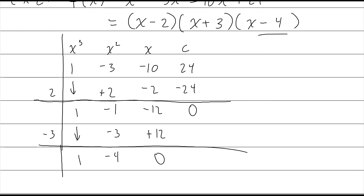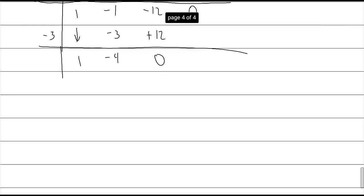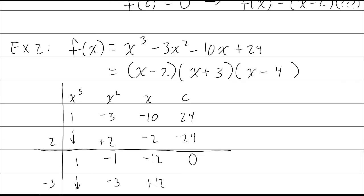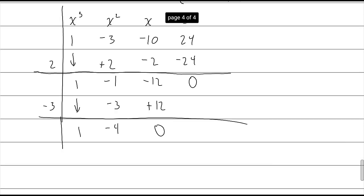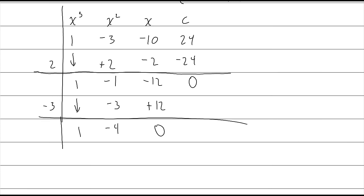The remaining coefficients are 1 and negative 4, giving us the last factor x minus 4. So the fully factored form is (x minus 2)(x plus 3)(x minus 4). If I wanted to solve this equation, I'd set it equal to zero and solve each factor individually.